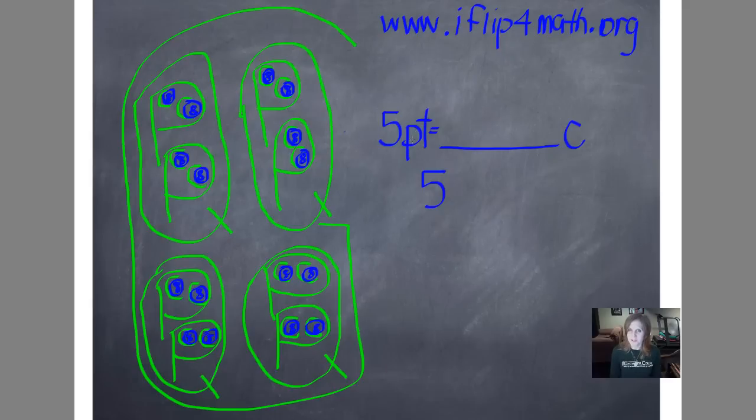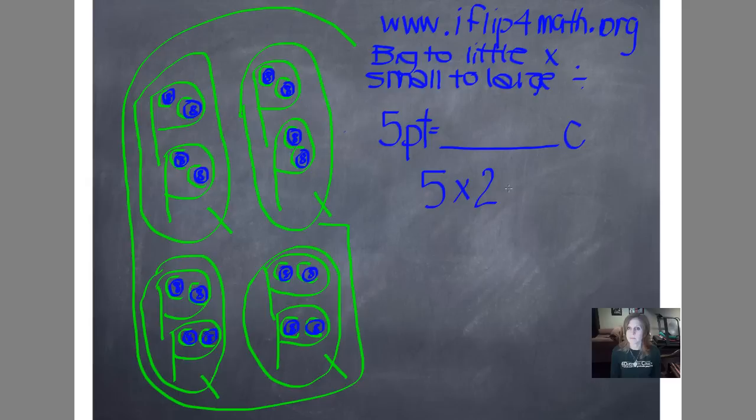I can look right at my G chart, and I can see that a pint is bigger than a cup because there are two cups in every pint, and the cup is inside the pint. So if a pint is bigger and a cup is smaller, then I'm going from big to little. So remember the saying, big to little multiply, small to large divide. Big to little multiply, there's my multiply symbol, small to large divide. And in this case, I'm going from big to little, so I'm going to multiply. So I put my multiplication symbol right next to my five. And then I just have to figure out how many of the smaller units are in the larger units, so how many cups are in a pint. And in one pint, there are two cups. So five times two is ten. Five pints equals ten cups.